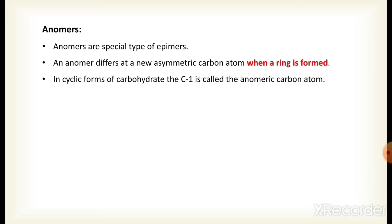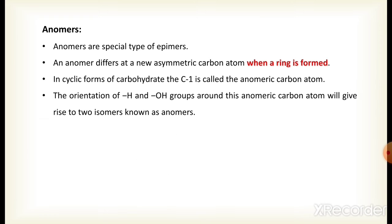In the cyclic form of carbohydrates, carbon number 1 is called the anomeric carbon atom. The orientation of the hydrogen and hydroxyl groups around this anomeric carbon atom will give rise to two isomers, and these isomers are known as anomers.